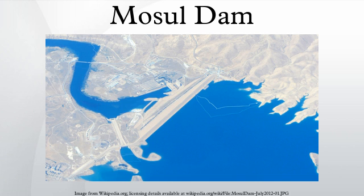At full capacity, the hydroelectric dam holds about 11.1 cubic kilometers of water and provides electricity to the 1.7 million residents of Mosul. The dam's main 750 megawatt power station contains four 187.5 megawatt Francis turbine generators. A pumped storage hydroelectricity power plant with a capacity of 250 megawatts and a run-of-the-river dam downstream with a 62 megawatt capacity also belong to the Mosul Dam scheme.